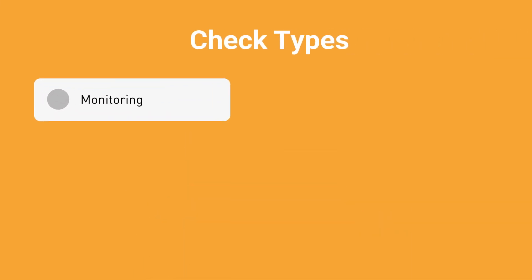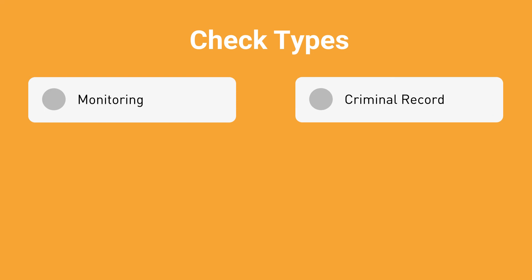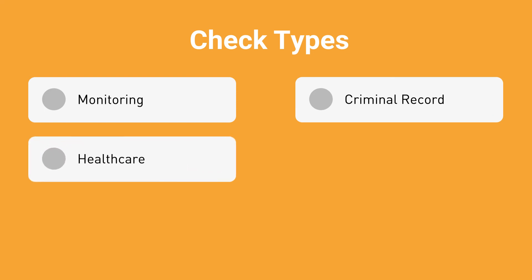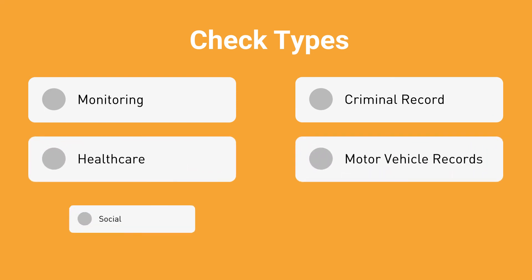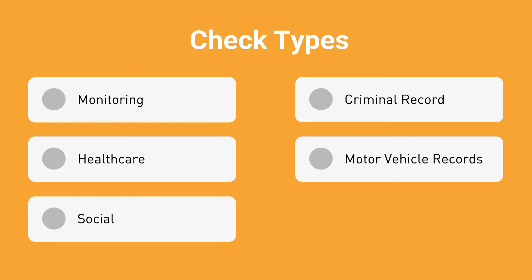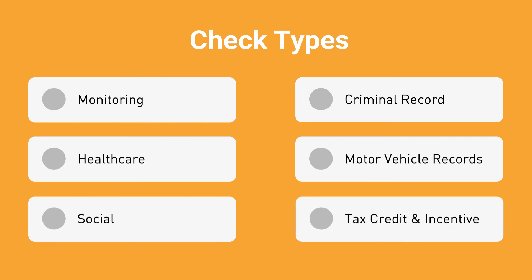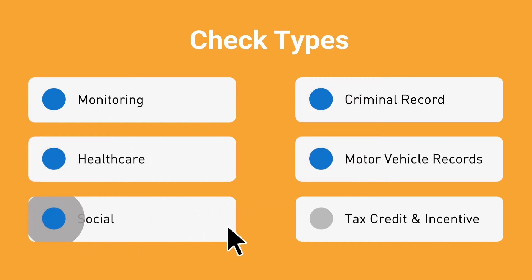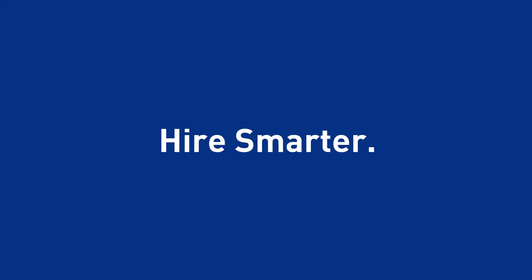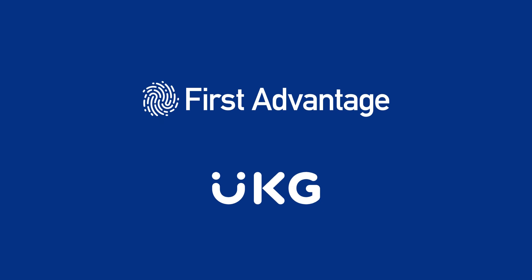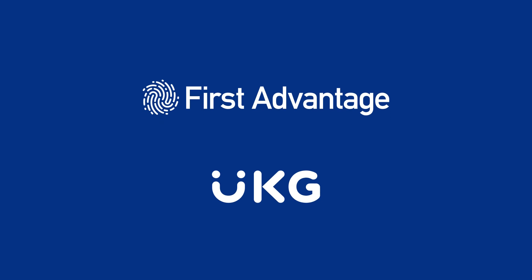Our complementary product offerings — including monitoring, criminal record, healthcare, motor vehicle records, social, and tax credit and incentive services — can be quickly and easily added to your program, further reducing your risk and maximizing your investment. Hire smarter. Onboard faster. Done. That's the power of a certified UKG Pro recruiting integration with First Advantage.